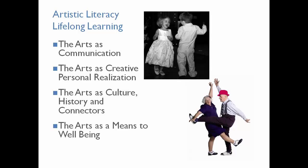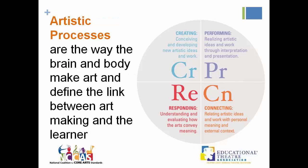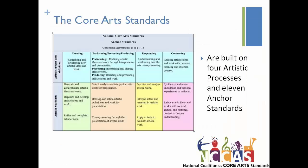The standards spilled out in a process model. Artistic processes are really the way the brain and the body make art — they link art making with the learner. Four artistic processes were identified: Creating, Performing, and for some disciplines, producing or presenting (in media arts we call it producing), Responding, and Connecting. These spill down into 11 anchor standards, which really identify what artistic literacy looks like in terms of general knowledge and skills.